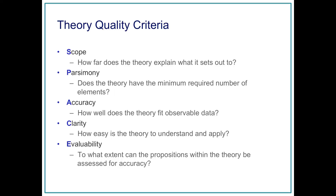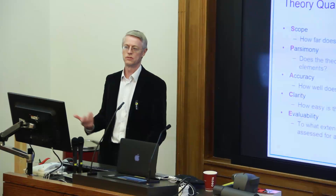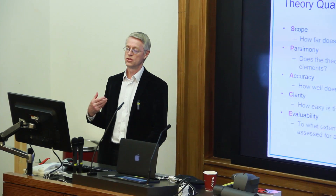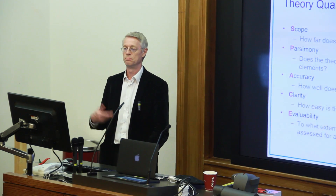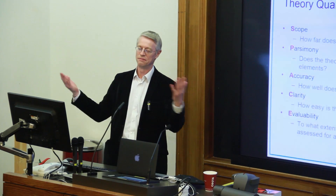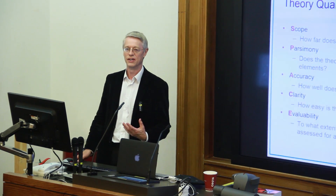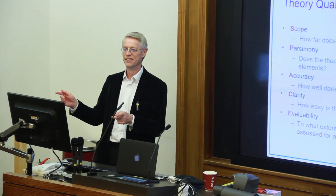If we're thinking about what's going to make a good theory, there are a number of different criteria which are used. In the ABC book, Susan and her team developed nine criteria, which they got general agreement on, and I've collapsed them into five so that they spell SPACE. Scope: how far does the theory explain what it sets out to? Lots of theories in behaviour change say that they're theories of behaviour, but they're not. They're theories of particular behaviour in a particular context. Like the theory of planned behaviour — it's not a theory of behaviour, it's a theory of planned behaviour. The clue was in the title.